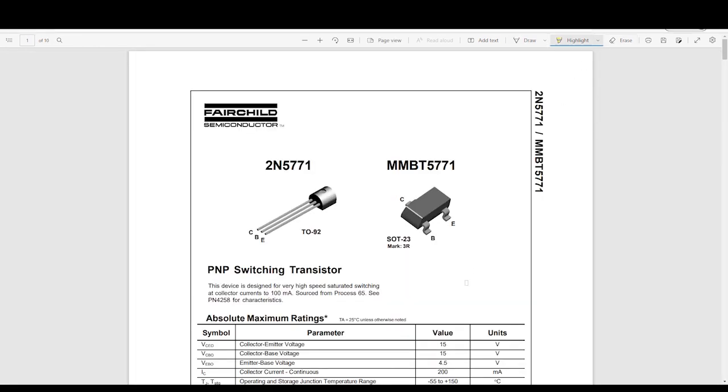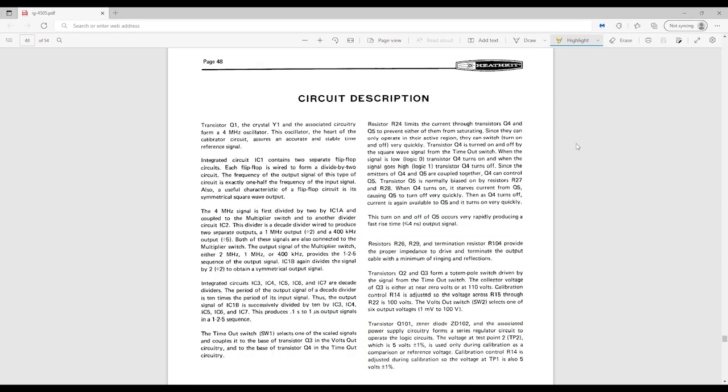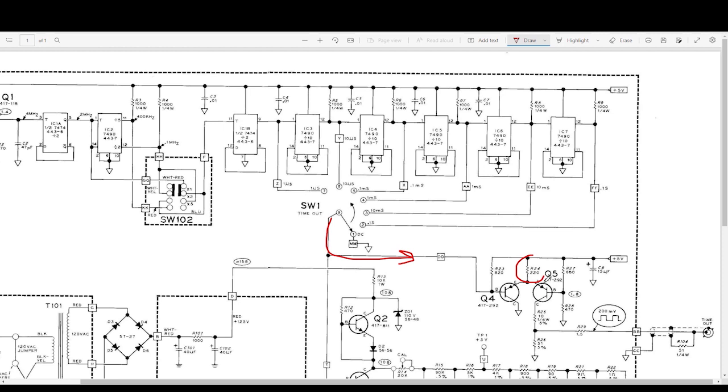Q4 and Q5 are 2N5771s, which according to this old Fairchild datasheet, are high-speed saturated switching transistors. But now here's an interesting tidbit. According to the circuit description in the manual, Q4 and Q5 are biased such that they are switched from their active regions to cutoff so that they can turn on and off very quickly. Now, I did a quick check of the circuit design, and sure enough, R24 at 220 ohms does indeed limit the current such that Q4 and Q5 aren't able to reach saturation.